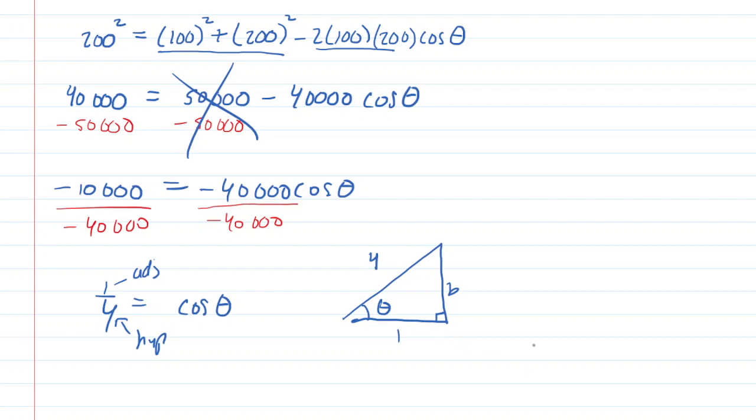So we know from Pythagorean theorem that one squared plus B squared is equal to four squared. We have one plus B squared is equal to 16. Subtract one from both sides. B squared is 15. And therefore, when you square root both sides of that, you will see that the B is the square root of 15.